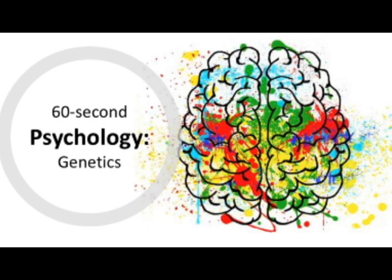Understanding genotype and phenotype supports the idea of interactionism, showing that it is not just genetics that impacts a person's phenotype, but also the environment. For example, not everyone who has the MAOA gene is aggressive, therefore suggesting that environmental factors impact the phenotype of these genes. There are, however, weaknesses of using genetics to explain behaviour, as some research oversimplifies the influence of genes. For example, no behaviour is caused by one specific gene, which therefore exaggerates the role of genes.